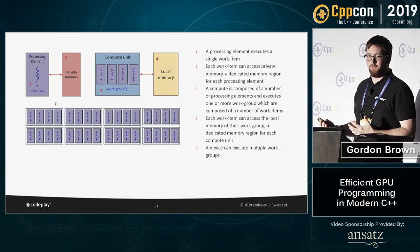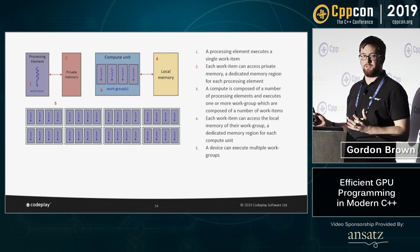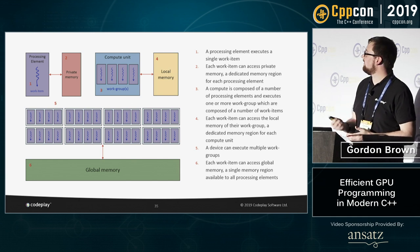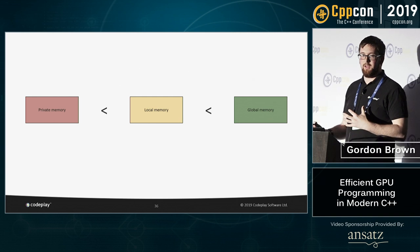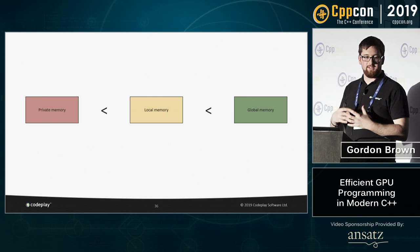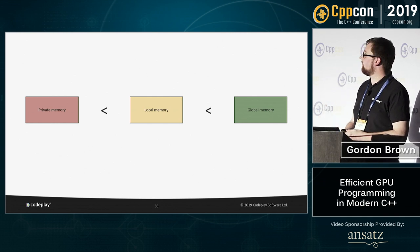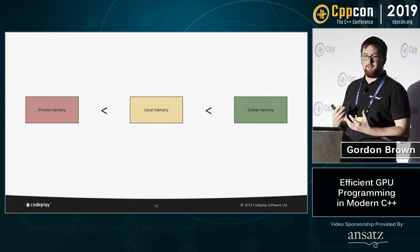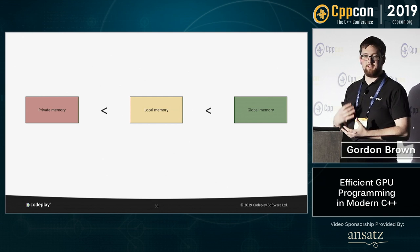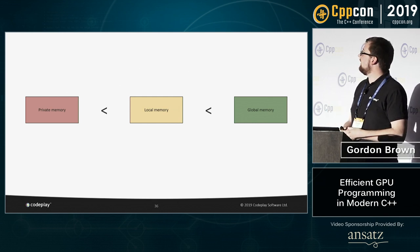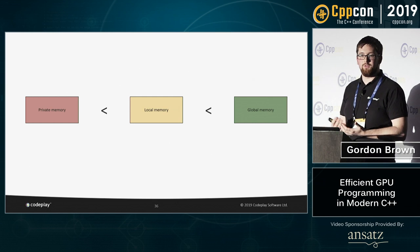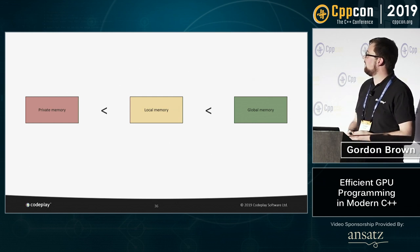When you execute a kernel in SYCL, you launch a large number of work items in equally sized work groups, and every work item can access global memory. You have a hierarchy of memory regions — private, local, and global — each varying in size and access latency. Private memory is very small but very fast. Local memory is still pretty fast and a little bigger, and it's shared. Global memory is generally very slow to access, usually because it goes through an off-chip bus.